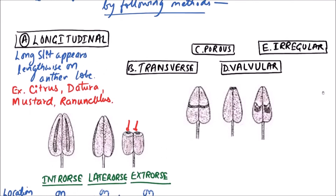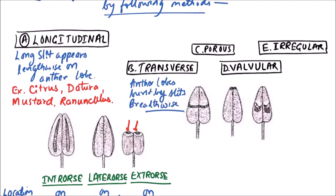The next type is transverse dehiscence. In transverse type of dehiscence, anther lobes burst by slits breadthwise. The examples include ladies' finger and althea. This is the transverse slit.